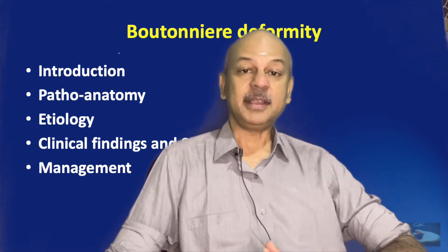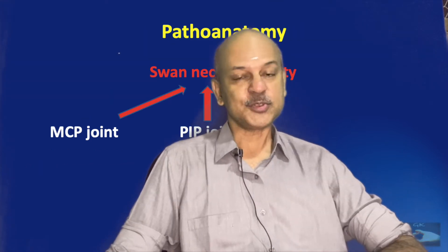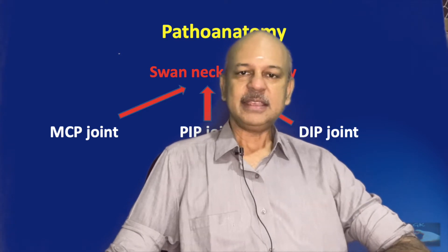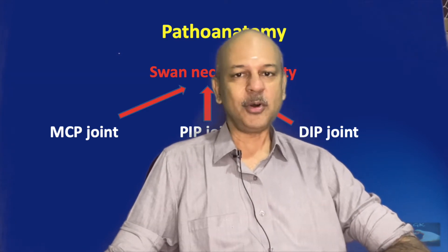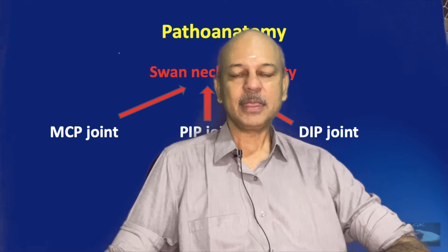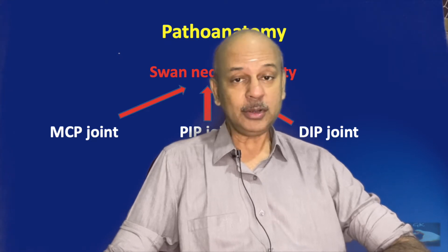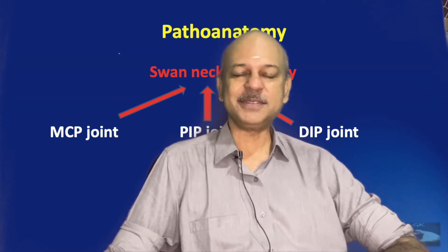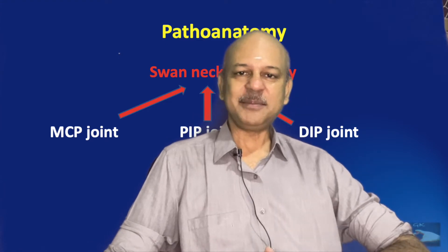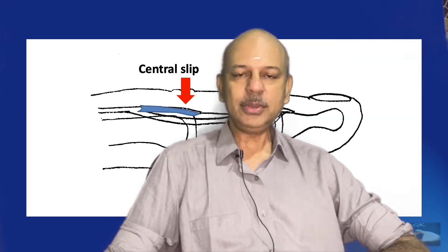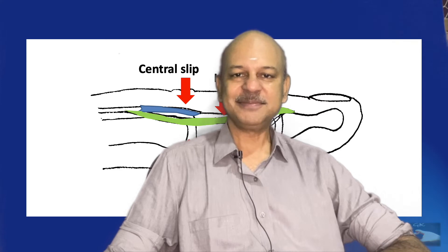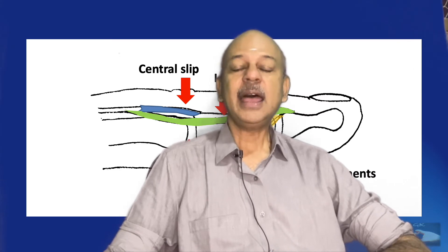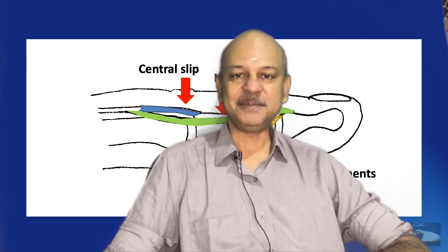When we compare the Swan Neck deformity and the Boutonniere deformity, definitely the problems of function are more in the Swan Neck deformity. But the Boutonniere deformity also has its own unique problems. In this video, we shall see about these problems, how the Boutonniere deformity is caused, what are all the conditions in which it occurs, and how it can be treated.